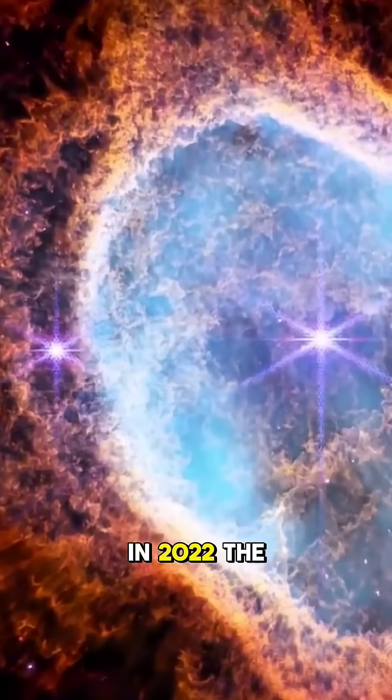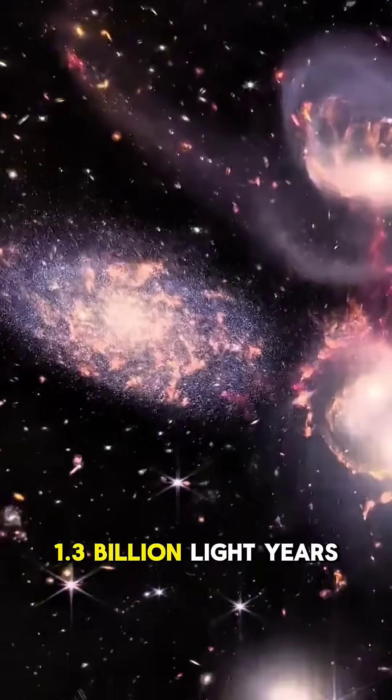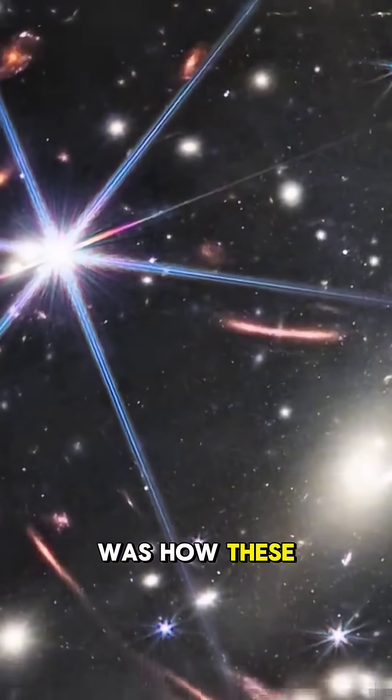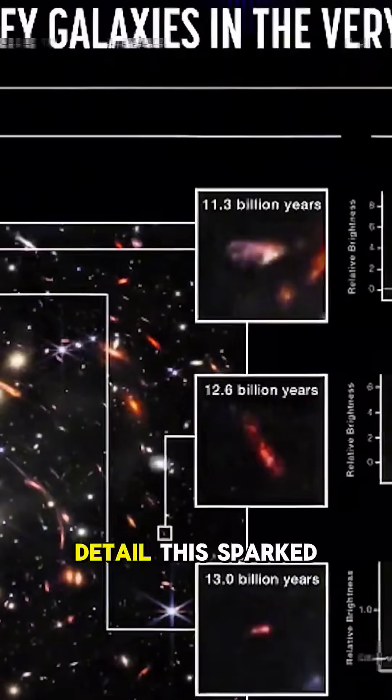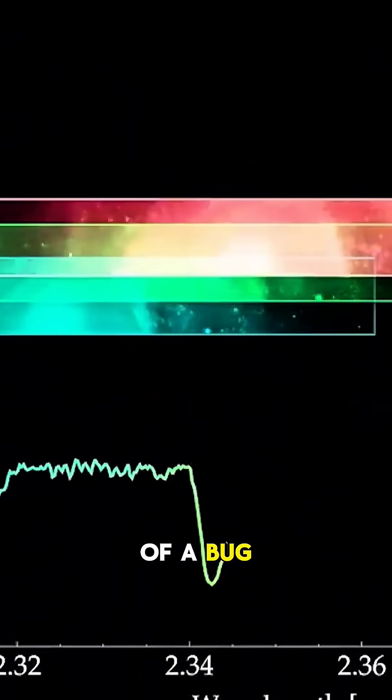In 2022, the Webb telescope captured images of a group of galaxies 1.3 billion light-years away. What stunned astronomers was how these galaxies looked identical, down to every detail. This sparked a wild theory. Maybe our universe is a simulation, and this was the first evidence of a bug in the system.